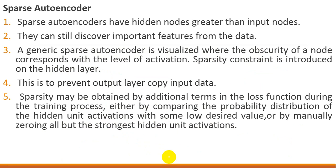Let's move on. Third is the sparse autoencoder. As I mentioned regarding over-completeness, sparse encoder gives you the feature that your hidden nodes will be more than your input nodes. This is useful in many scenarios where you want more additional information in the hidden layer for decoding. This is also a regularization technique. Point number one: sparse autoencoders have hidden nodes greater than the input nodes but can still discover important features from the data.